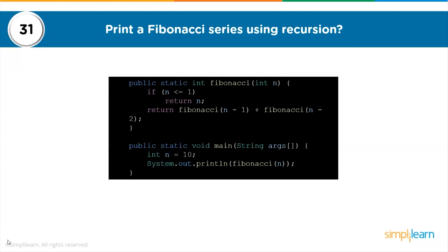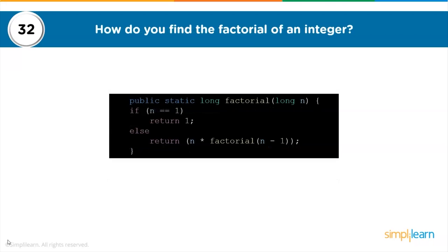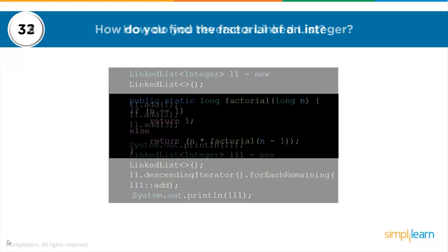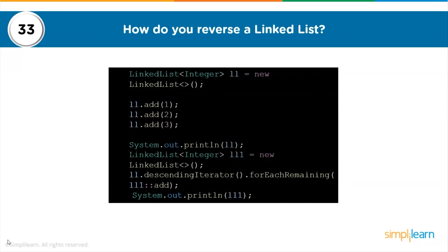The 31st question: print a Fibonacci series using recursion. Fibonacci numbers follow the sequence 0, 1, 1, 2, 3, 5, 8, 13, 21, and so on. They can be calculated using the mathematical formula in the Fibonacci recursive function. The 32nd question: how do you find the factorial of an integer? The factorial multiplies a number by every number below it — for example, 5! = 5×4×3×2×1 = 120. The recursive function multiplies the number until it reaches 1.